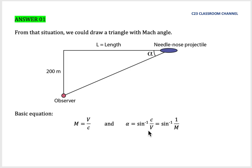From that situation we can draw a triangle of Mach angle like this. We have a 90-degree triangle here, so we can use the idea of trigonometry. Let's say the angle here is alpha. This is the needle-nose projectile, this is the length L, the height is 200 meters, and this is the observer.